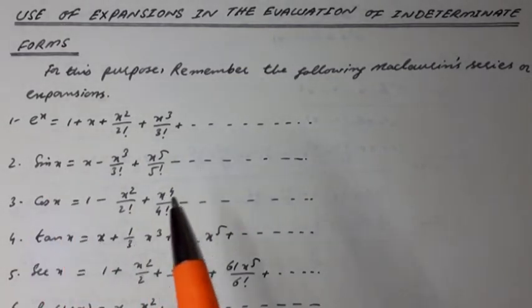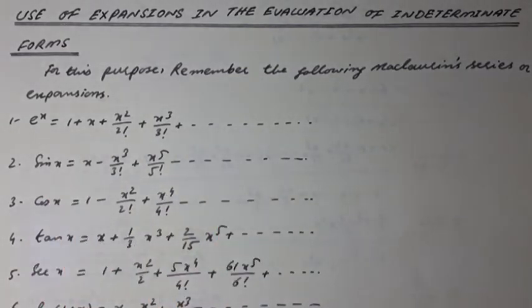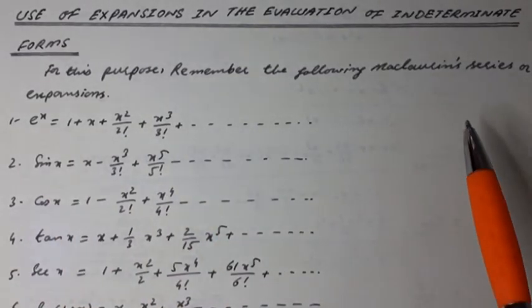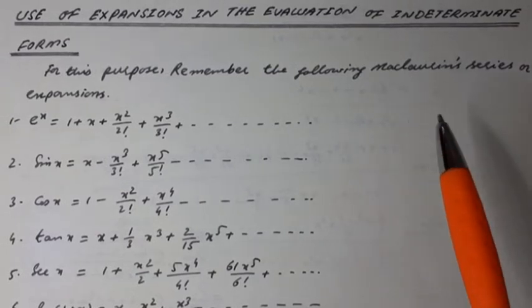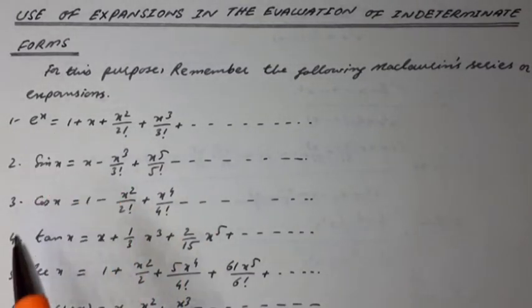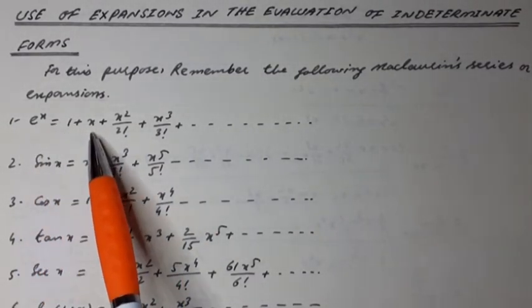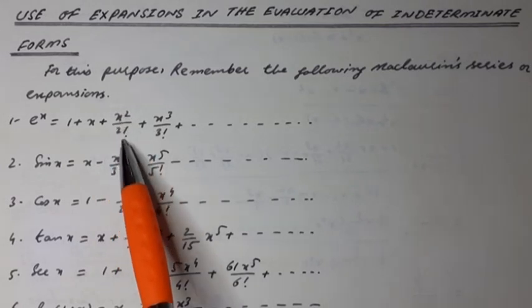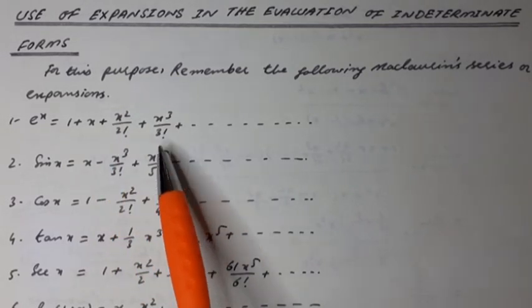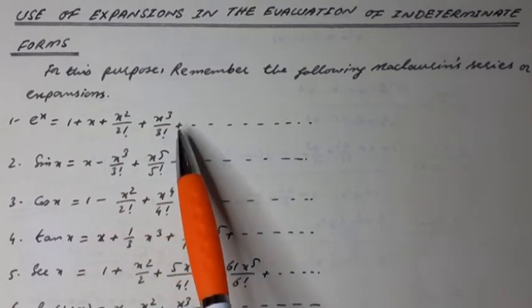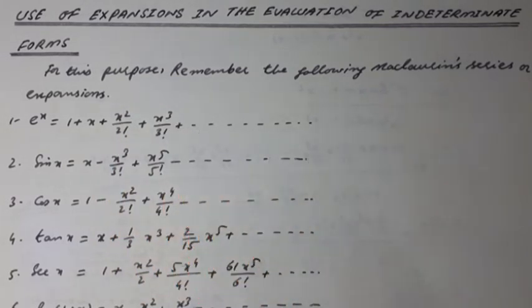For this purpose, remember the following McLaurin series or McLaurin's expansions. e to the x is equal to 1 plus x plus x squared over 2 factorial plus x cubed over 3 factorial plus so on.